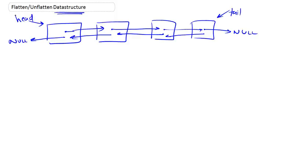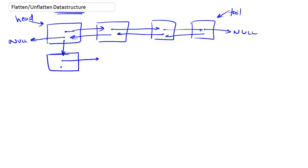This is an ordinary doubly linked list. The slight variation we're adding is that every single node will be accorded a child pointer, and that child pointer could be pointing at the start of another doubly linked list. That child would have a next, a previous, and also a child, and so on and so forth.